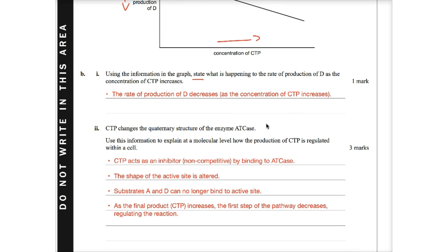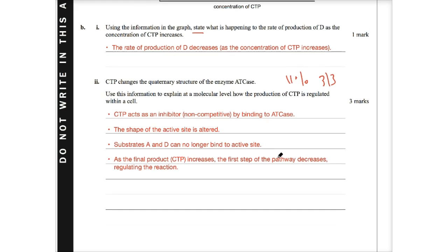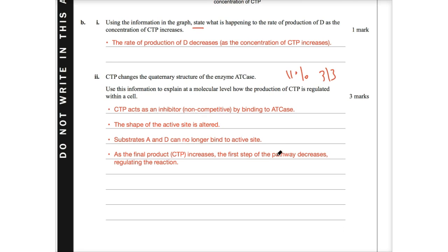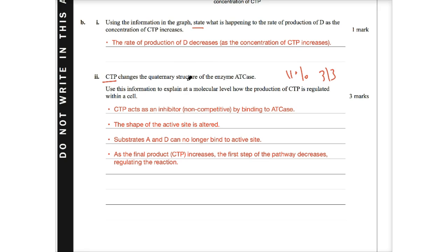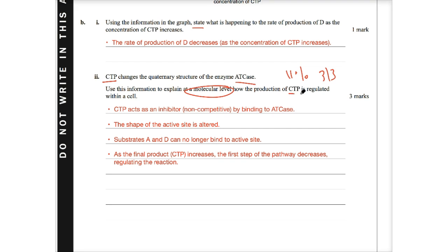Now, moving into part II. And I just want to flag with you here that only 11% of the state got three out of three marks. And what that shows is that a lot of students will give really long, long, long responses. But they'll actually open themselves up to contradictions that they make with the detail they think they're giving. So remember, we want to give a logical, clear, and concise answer. Just allow the assessor to see your logic. I think that's the big thing. So what does it say? CTP changes the quaternary structure of the enzyme ATCase. Use this information to explain at the molecular level how the production of CTP is regulated within a cell.